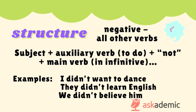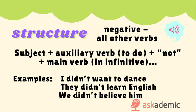The structure for a negative past simple sentence with all other verbs would be the subject plus auxiliary verb to do plus not, plus the main verb in the infinitive, and then the rest of the sentence. For example: I did not want to dance; they didn't learn English; we didn't believe him.